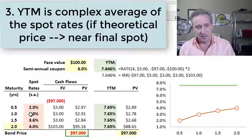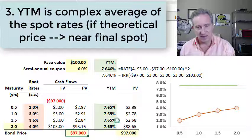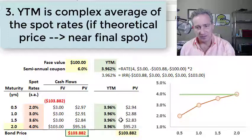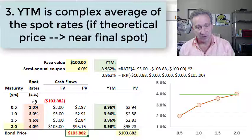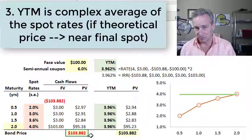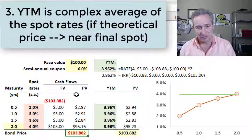The third interpretation is that the yield is a weighted average of the spot rates. So if we did use the theoretical bond price, we expect the yield to be within the range of spot rates.